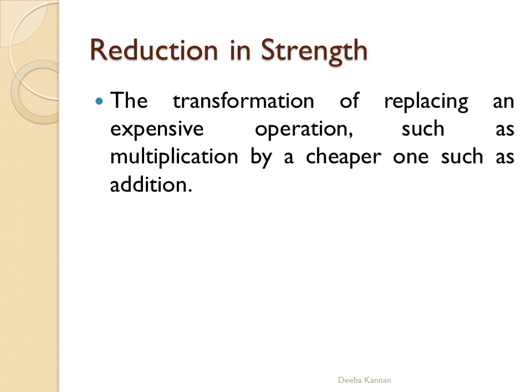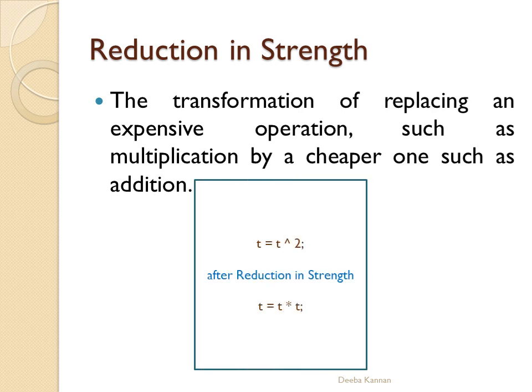The next technique is reduction in strength, which means replacing an expensive operation with a cheaper one. For example, an exponentiation operation can be replaced with multiplication, and a multiplication can be replaced with addition. When an expensive operation inside a loop is replaced with a cheaper one, it saves the cost of implementation. For example, t = t^2 is expensive; instead we write t = t * t. Both give the same result, but the cost of the first instruction is higher — and when it is inside a loop, it has a greater effect.